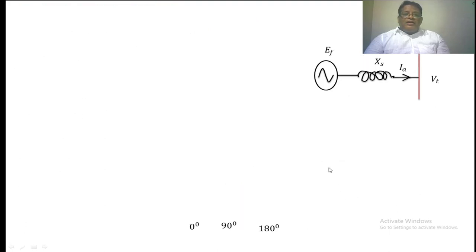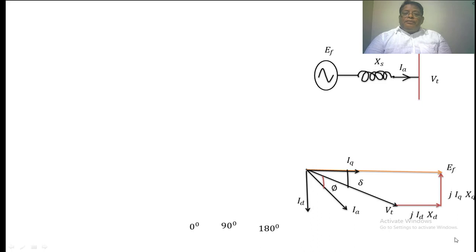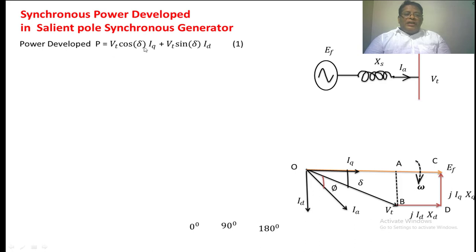Now we derive the same expression for the salient pole synchronous generator connected to the infinite bus. We take VT as reference. The armature current IA is resolved into two components: the d-axis component ID and the q-axis component IQ. The q-axis component is in phase with EF. We add j·ID·Xd from the tip of VT perpendicular to ID, then add j·IQ·Xq up to EF. This is the phasor diagram of the salient pole synchronous generator neglecting stator resistance. The power developed is P = VT·cos(delta)·IQ + VT·sin(delta)·ID, where VT·cos(delta) is in phase with IQ and VT·sin(delta) is in phase with ID.